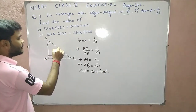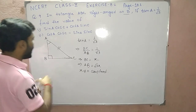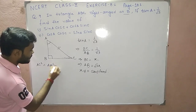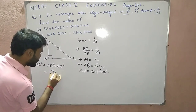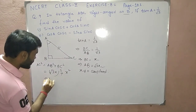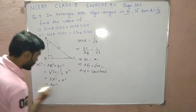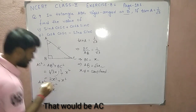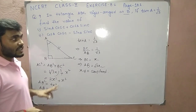Now we need the value of the hypotenuse because we are dealing with sin A and cos C. By the Pythagorean theorem, AC² equals AB² plus BC². AB is root 3x, so AB² is 3x², and BC² is x². That gives AC² equals 4x², so AC equals 2x.